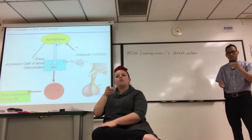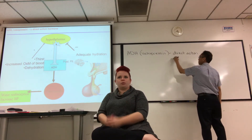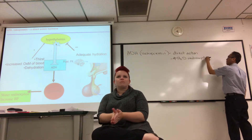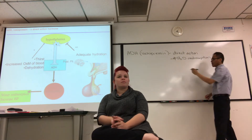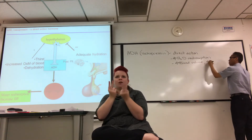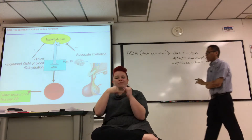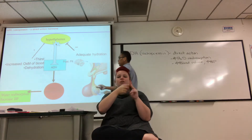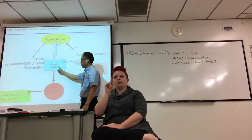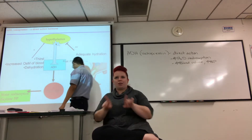In this example, ADH affects and increases water reabsorption, which effectively increases blood volume and increases blood pressure. I drew a cell going from the hypothalamus to the posterior pituitary because it's a direct neural connection — synthesized there, released from the posterior pituitary. It acts on the kidney tubules for water reabsorption and increased BP.